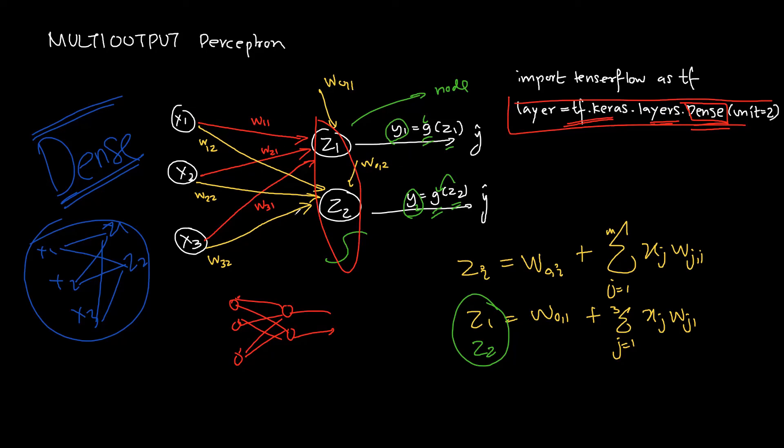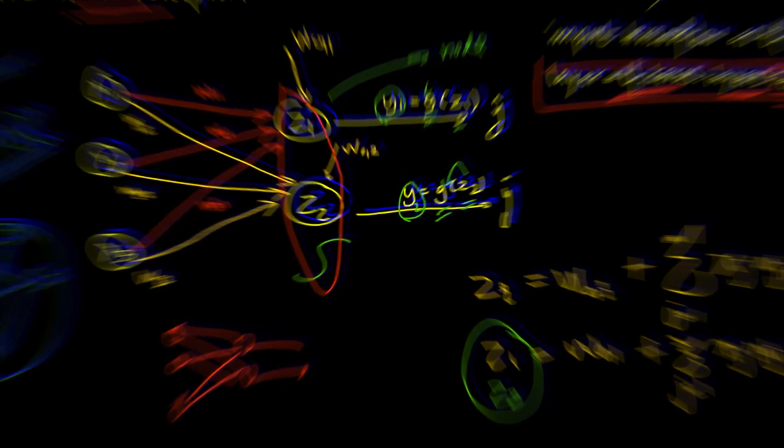So this is basically how your multi-output perceptron works. This is still a perceptron. Now we have only increased this in this direction, but we can have more than one layer. So in the next video we will see how we can have different layers in neural networks that will make it even more complex.